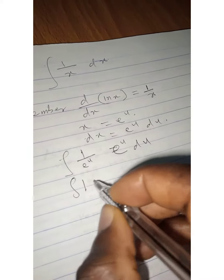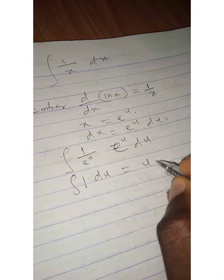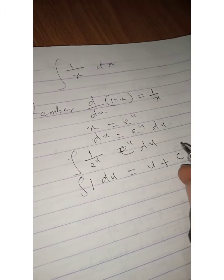This equals u plus c, where c is the constant of integration.